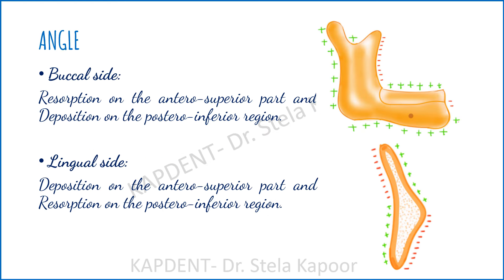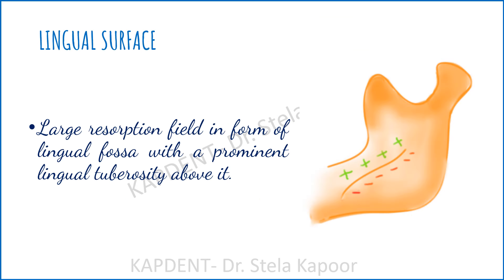On the buccal side, resorption on the anterosuperior part and deposition on the posteroinferior region can be seen at the area of the angle, with the opposite pattern seen on the lingual side. On observing the lingual surface of the mandible, one can make out a large resorption field in the form of the lingual fossa with a prominent deposition field — the lingual tuberosity — lying above it.